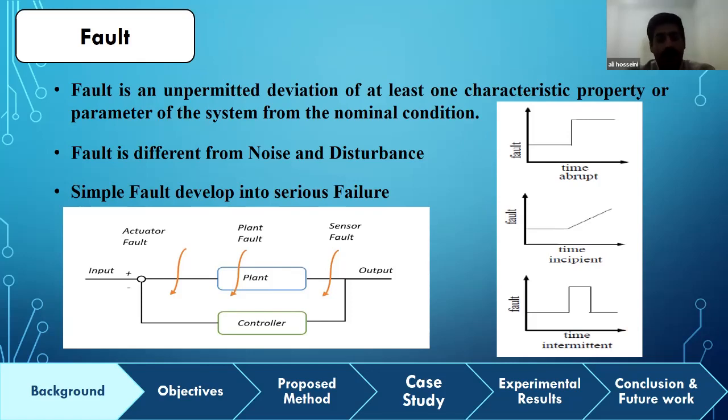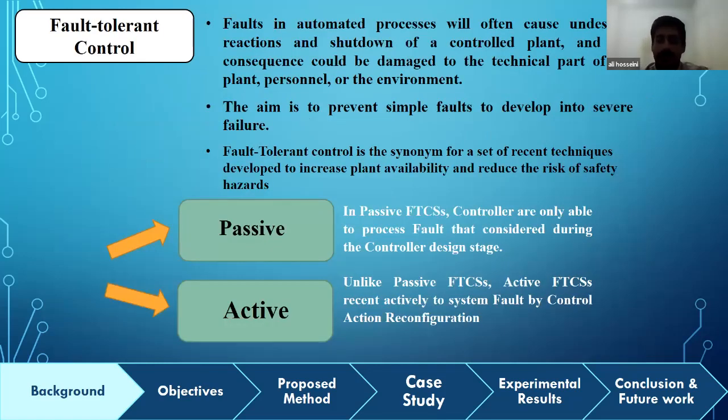Here I'm going to talk about one powerful and novel method to prevent simple fault from developing into severe failure. Fault-tolerant control, or FTC, is a synonym for a set of recent techniques developed to increase plant availability and reduce the risk of safety hazards. The simple definition of fault-tolerant control was given by Professor McGregor in 2012. He said that when stability and closed-loop performance are maintained despite faults, the system is said to be fault-tolerant and the control system that ensures this is the fault-tolerant controller.